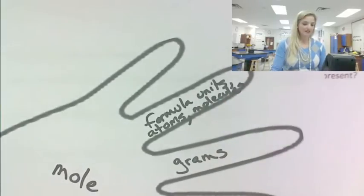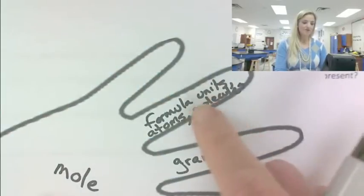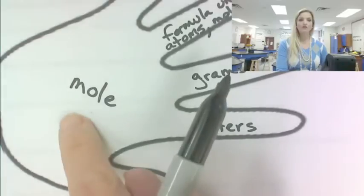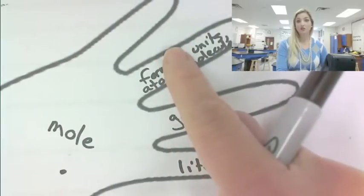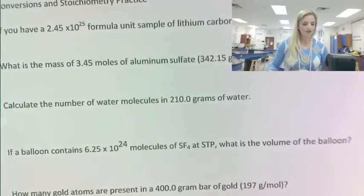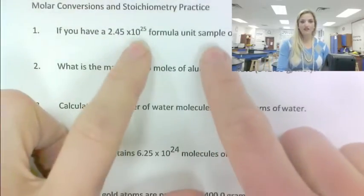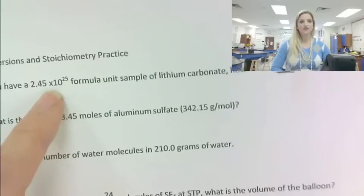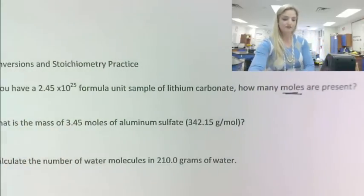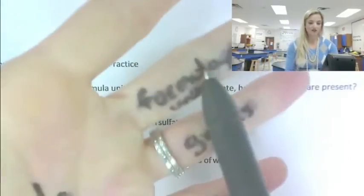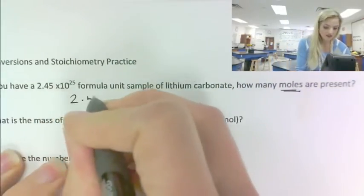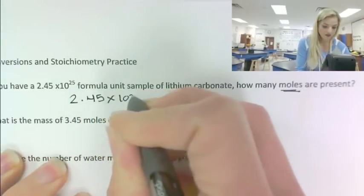I can see here, if this is my hand, that if I want to go from formula units to moles, or from moles to formula units, that's just going to be one step. So I have some practice problems to show you how this works. Just a typical question, if you have so many formula units of, in this case, lithium carbonate, how many moles are present? The kids can look at their hand and go, okay, that's just one step. So they can start with the formula units they're given.